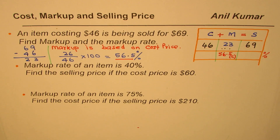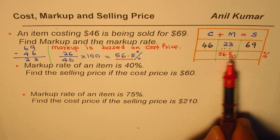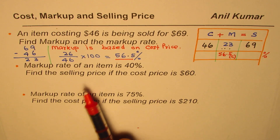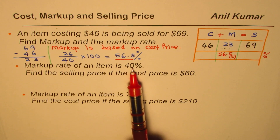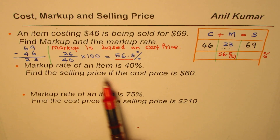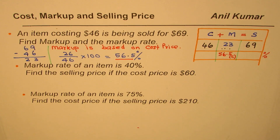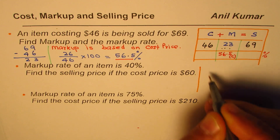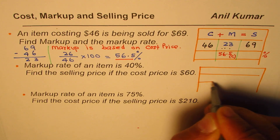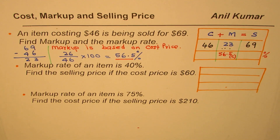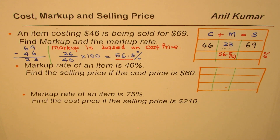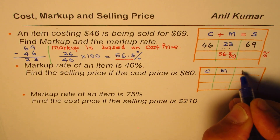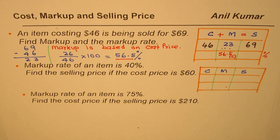You will notice that knowing the 56.5 percent markup, you can also calculate the sale price — we'll see how in the next example. The next example is: markup rate of an item is 40 percent. We are given the markup rate this time; find the selling price if the cost price is $60. So we are given the markup percent and the cost price, and we need to find the selling price.